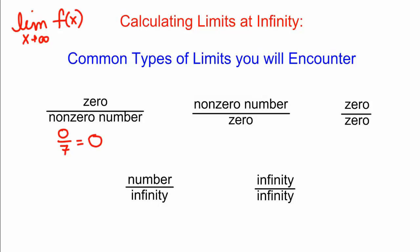Now say you encounter a new problem where the form of the answer is 7 divided by 0 — a non-zero number over 0. What does that tell you? Well, if we're going to a number here, this would be a vertical asymptote, and if we're going to infinity, we would have an answer of infinity, negative infinity, or does not exist.